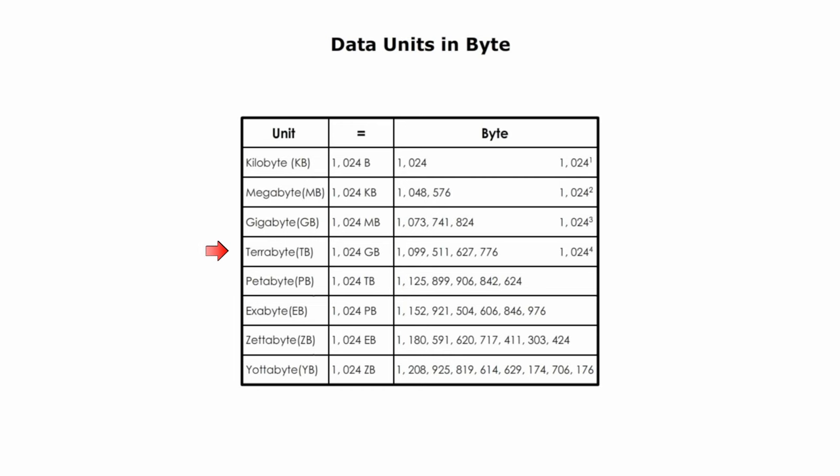One terabyte is 1,024 to the fourth power bytes. Terabyte is an enormous data unit, but we can understand its size. The following four data units — petabyte, exabyte, zettabyte, and yottabyte — are colossal. They are beyond our comprehension because we don't use them in everyday situations.